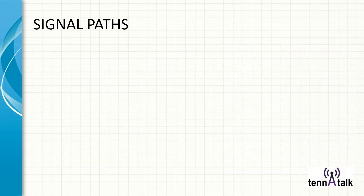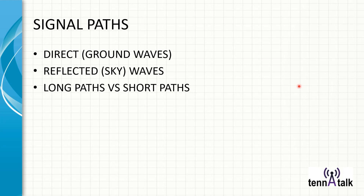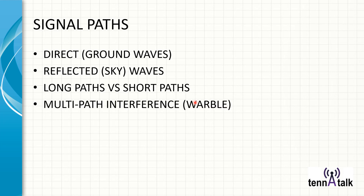Let's talk about some different signal paths. First, there's a direct or ground wave, very often used for local communication — typically VHF and UHF direct point-to-point ground waves. Then there's the reflected or sky wave, which bounces off the ionosphere. There's a concept called long paths and short paths: the long path is the far distance way around the Earth, and the short path is the more direct path — all on great circle routes. When you have multiple paths because of different reflections and bounces, you can have multi-path interference. That's where the warbles or fading come from on some weaker signals.